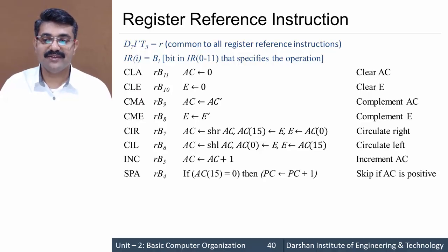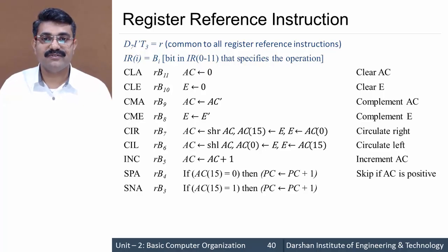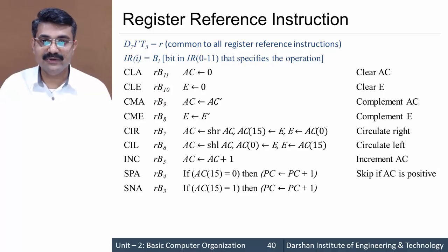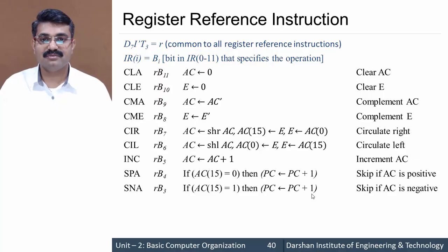The next instruction is SNA — it happens at r·b3. If the 15th bit of AC is 1 then the accumulator is negative, and we skip the next instruction by incrementing the program counter: PC equals PC plus 1. So skip if AC is negative.